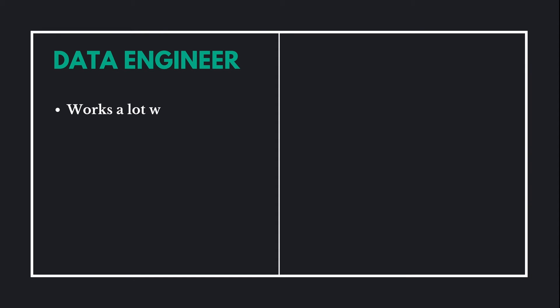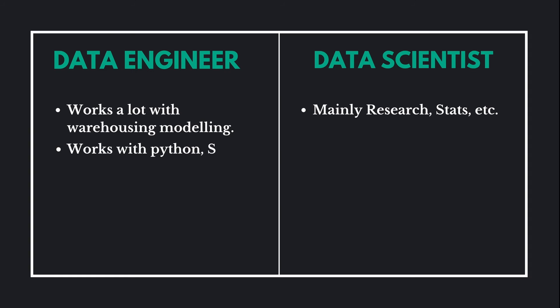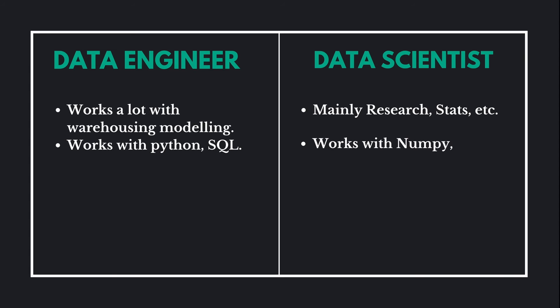Looking at key differences: data engineers work heavily with warehousing, table building, and data modeling - getting the right tables into a central warehouse. Data scientists on the other hand work with R&D and statistical analysis of data, researching which columns can be used for a machine learning model to improve efficiency. In terms of technology, data engineers use Python and SQL but also build ETL pipelines using tools like Airflow. Data scientists use Python and SQL similarly, but also use statistical and ML libraries like NumPy, scikit-learn, PyTorch, and NLTK.